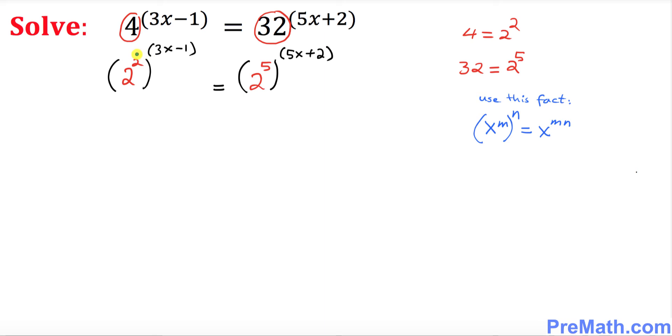We have one exponent 2, and then another exponent, so we can multiply them out using this fact. Likewise, on the right hand side, the exponents get multiplied together as well. Let's multiply them out.